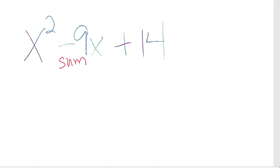Let's do another example. x squared minus 9x plus 14. So when we look at our example, the x term number tells me my sum, and the constant at the end tells me my product.